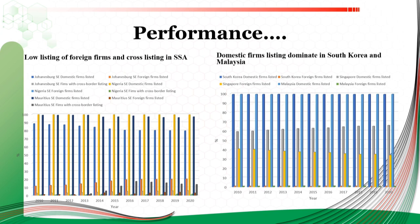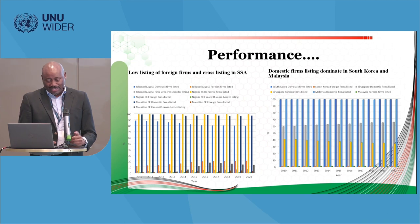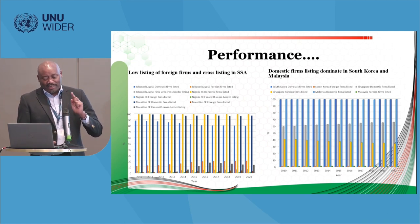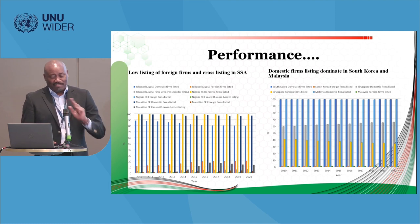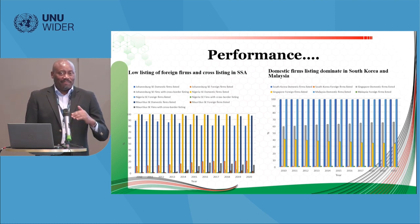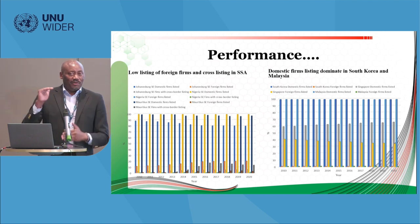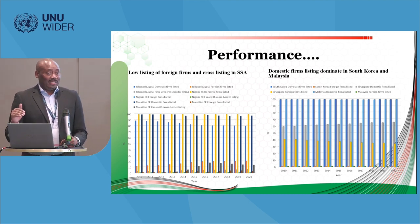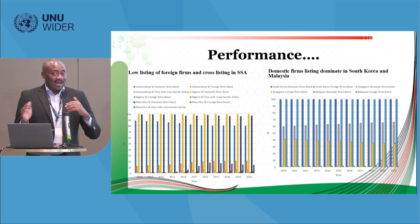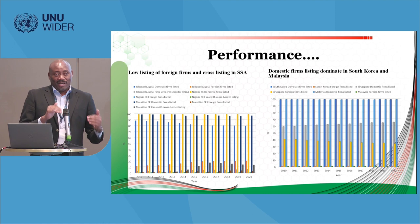When looking at foreign firms and cross-listing — taking cases like South Africa, Nigeria, and Malaysia — the majority of listed companies are domestic firms rather than foreign ones. A similar pattern occurs in South Korea and Malaysia. However, these are very vibrant capital markets compared to what we have in Africa.